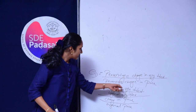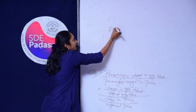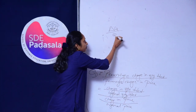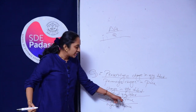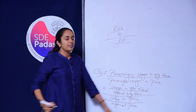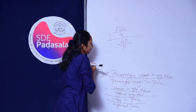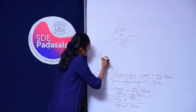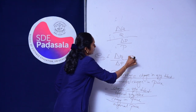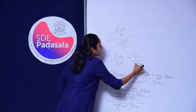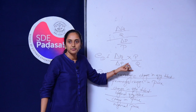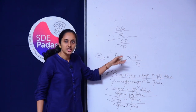Now, we can represent change in quantity demanded by delta Q and original quantity demanded by Q. Then we can represent change in price by delta P and original price by P. By cross multiplying, we will get the formula: (delta Q / Q) ÷ (delta P / P), which simplifies to (delta Q / delta P) × (P / Q). This is the formula for calculating Price Elasticity of Demand.